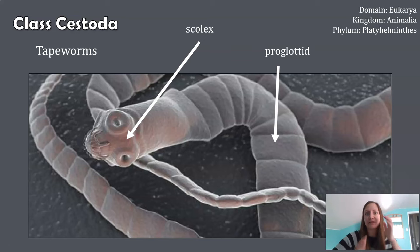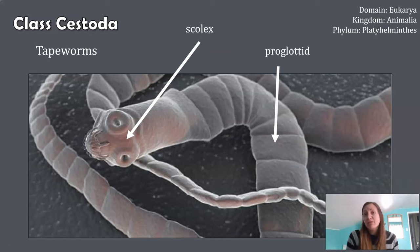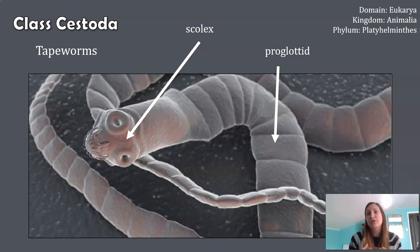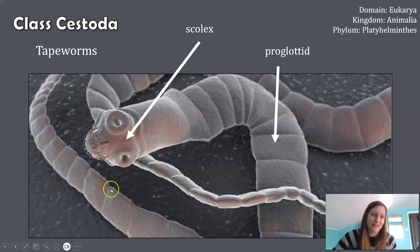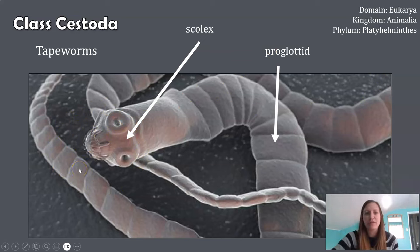Now there are lots of different species of tapeworms, and they infect a lot of different organisms. But despite the variety and diversity within tapeworms, they all share two common characteristics. One characteristic is this head region of the tapeworm, which is referred to as the scolex that you can see here. The scolex looks quite different between species, but it all has the same function — really for attachment.